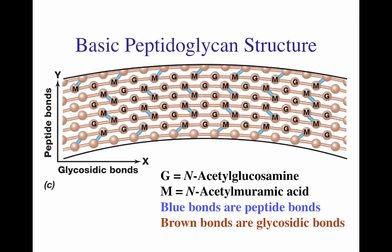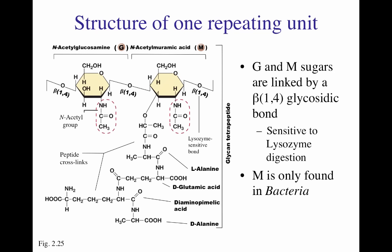This image shows the basic structure of the peptidoglycan layer. The N-acetylglucosamine sugars are labeled with a G and the N-acetylmuramic acid sugars are labeled with an M. What you have is intermittent sugars — an M followed by a G, followed by an M, followed by a G — labeled as glycosidic bonds along the x-axis. Each independent chain of peptidoglycan is attached to another chain through the N-acetylmuramic acid sugar. Those bonds are shown as blue bonds in the y-axis, where along the y-axis you have the different units attached by peptidic bonds.